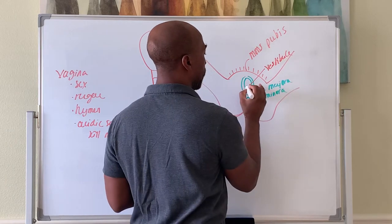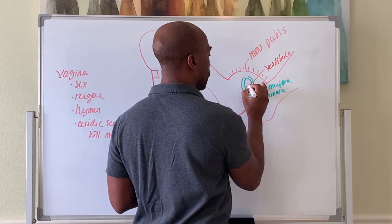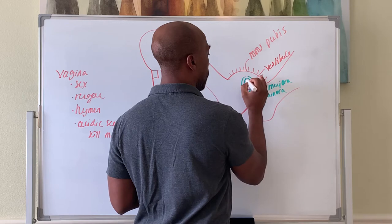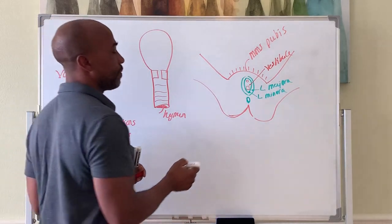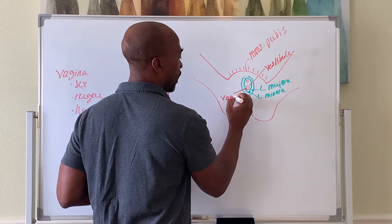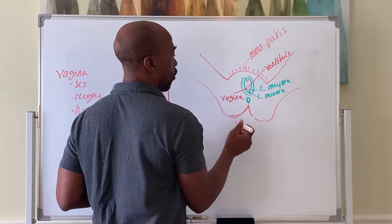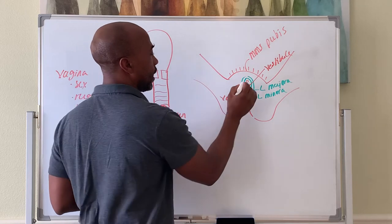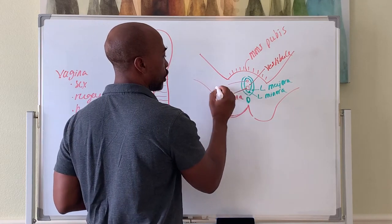In the vestibule, we have two openings: the opening to the vagina and opening to the urethra. This is the vaginal opening here for copulation, and here is the opening for urination.